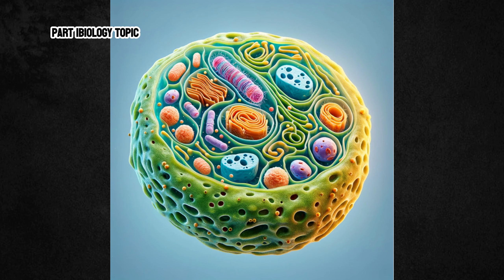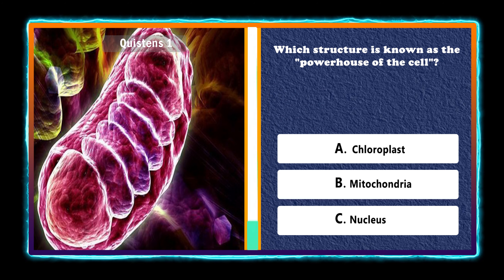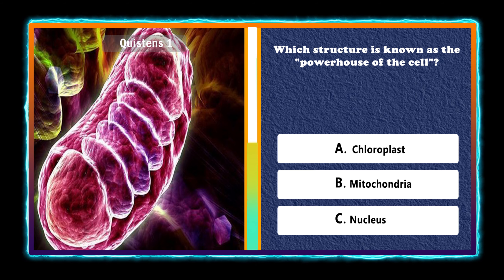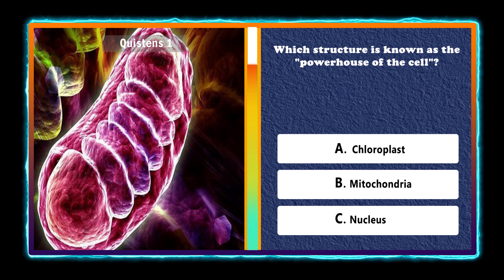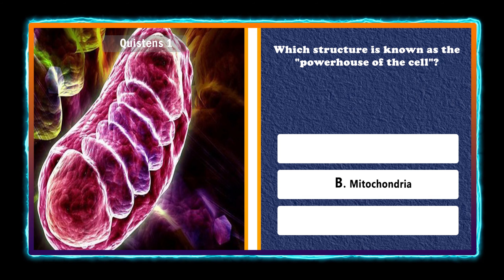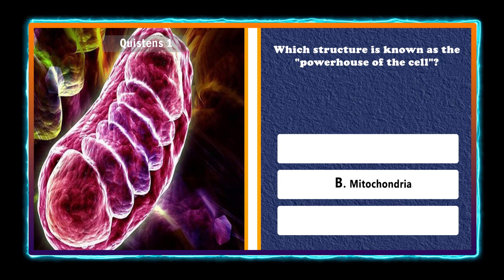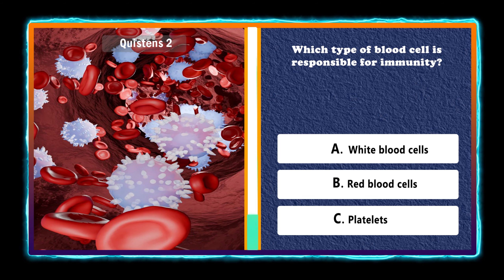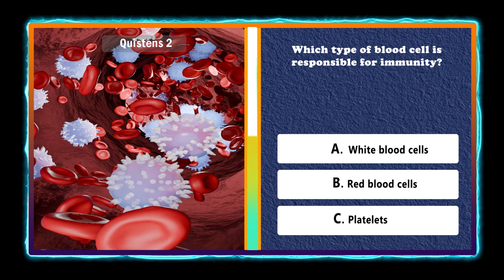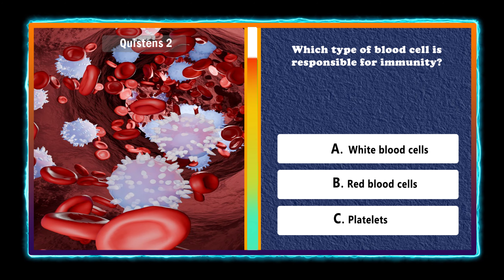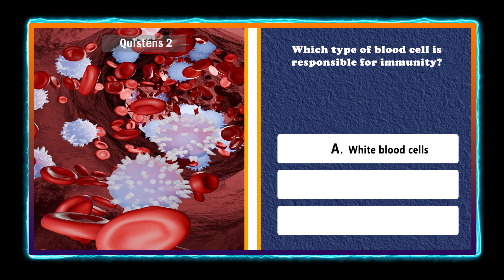Part 1, Biology topic. Which structure is known as the powerhouse of the cell? Mitochondria. Which type of blood cell is responsible for immunity? White blood cells.